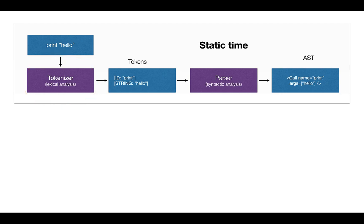The purpose of the tokenizer is to group individual characters into a stream of tokens. A token has a type and some value associated with that type. In this case we have two tokens: an identifier with the value 'print', and a string with the value 'hello'. The purpose is just more convenient handling instead of working with single characters.